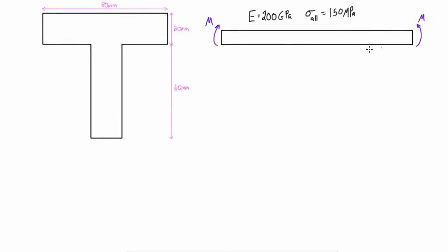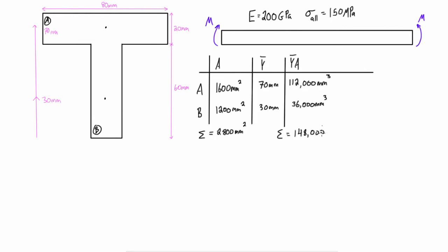If you haven't seen that already, go check it out. Otherwise we're just going to work through this pretty quick. The first thing we do is locate the centroids of the individual components. We'll call this section A and we'll call this section B. Then we want to throw those values into a table where we have the area, the location of the centroid, and the location of the centroid times the area.